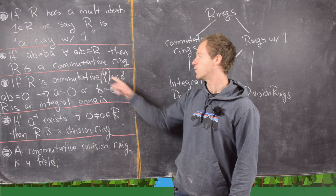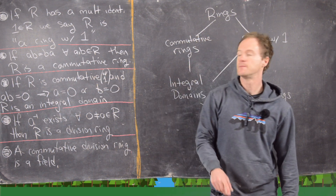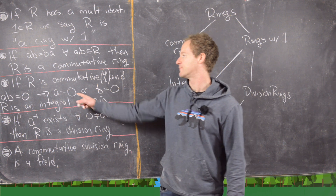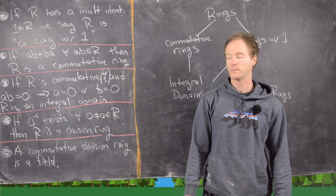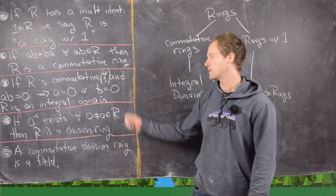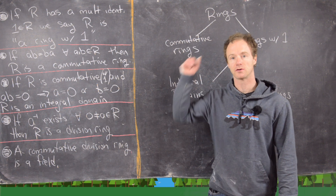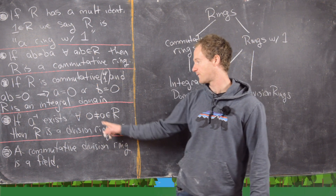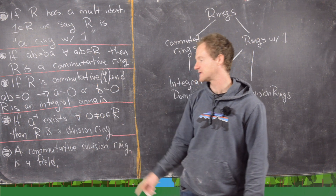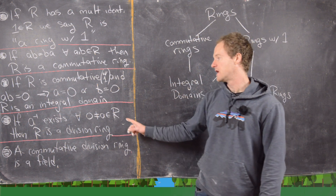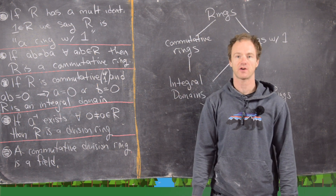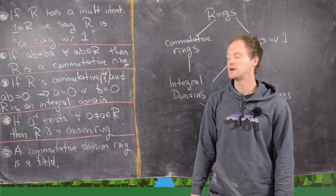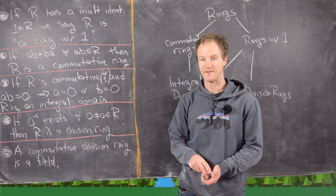If R is commutative with 1, and if AB equals 0 implies that A equals 0 or B equals 0, then R is called an integral domain. If A-inverse exists for all non-zero elements of R, then R is called a division ring. And a commutative division ring is called a field.